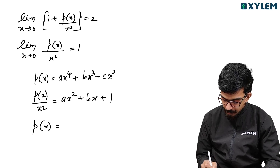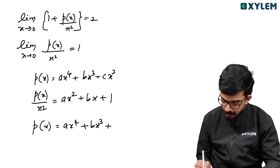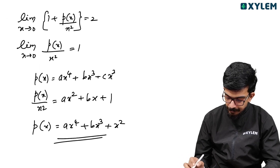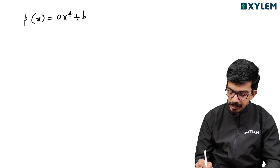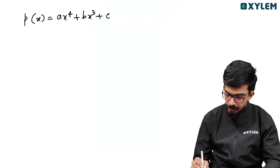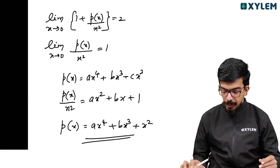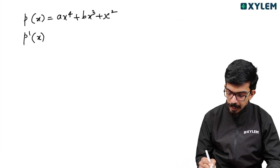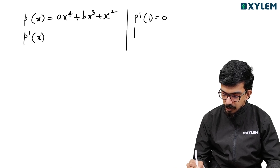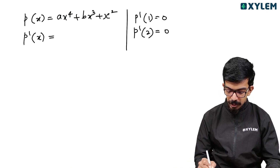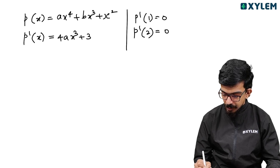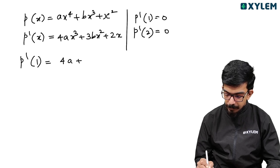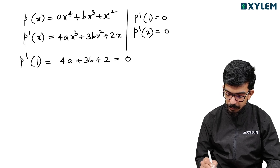So p(x) equals ax^4 plus bx^3 plus x^2. Since p(x) has extrema at x equals 1 and 2, p'(x) equals 0 at those points. p'(x) equals 4ax^3 plus 3bx^2 plus 2x. At x equals 1: 4a plus 3b plus 2 equals 0. At x equals 2: 32a plus 12b plus 4 equals 0.